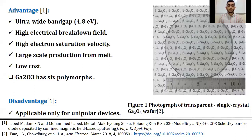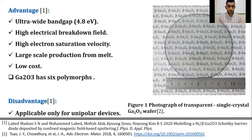The beta-polymorph is the most stable. However, gallium oxide has a serious drawback of developing P-type semiconductor. Therefore, it is used mostly in unipolar devices such as MOSFETs and Schottky barrier diodes.